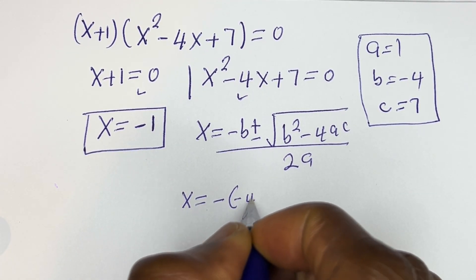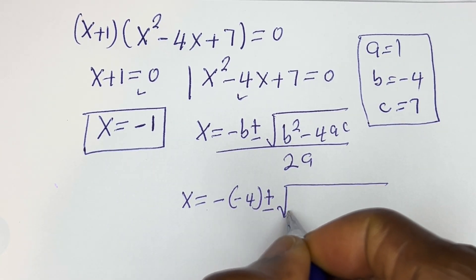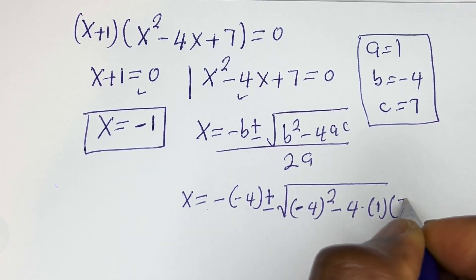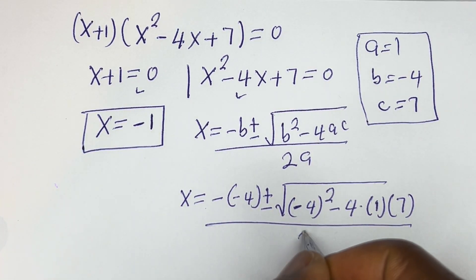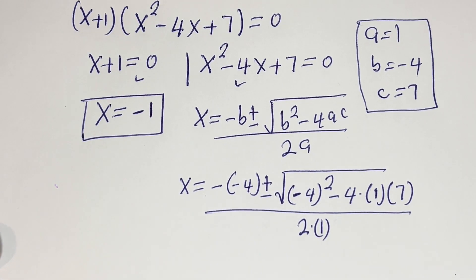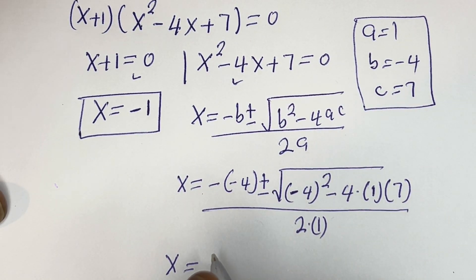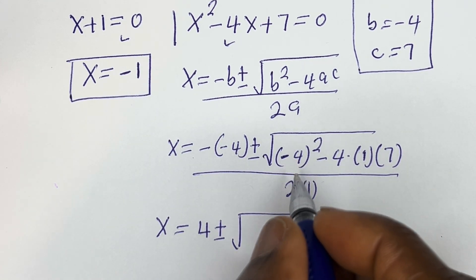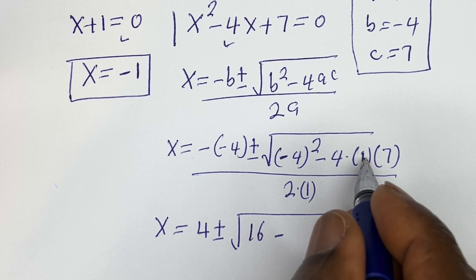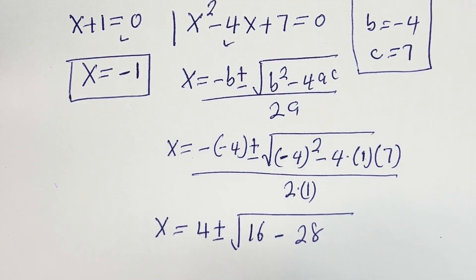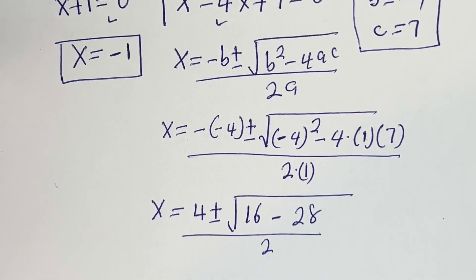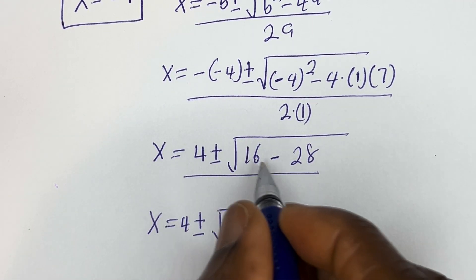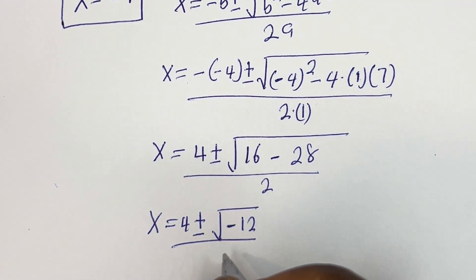Substituting: x equals negative (minus 4) plus or minus square root of (minus 4) squared minus 4 times 1 times 7, all over 2 times 1. This gives x equals 4 plus or minus square root of 16 minus 28, over 2, which is x equals 4 plus or minus square root of minus 12, over 2.